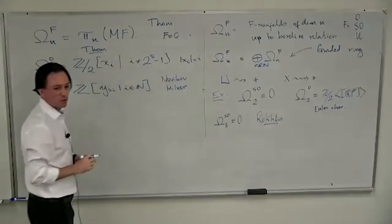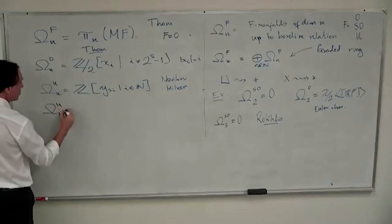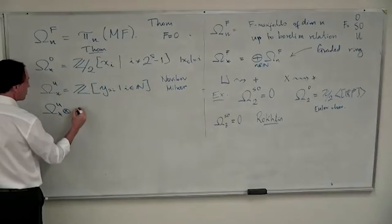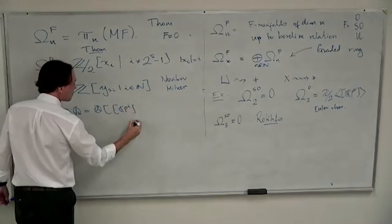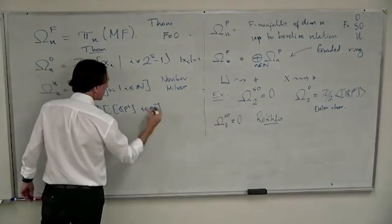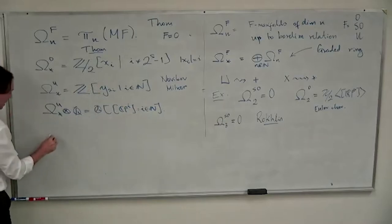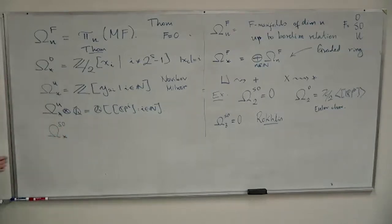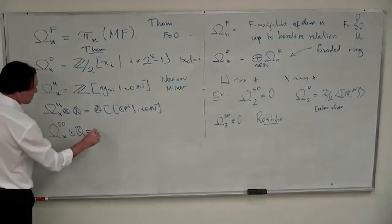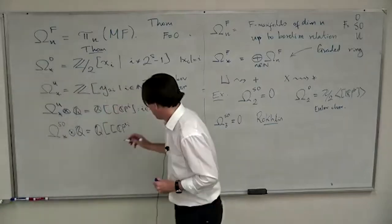This is Novikov and Milnor — I don't want to get into details about who did what, but it was known that if you tensor with the rationals the unitary bordism ring is a polynomial algebra generated on the complex projective spaces. The oriented bordism ring is very complicated, but if you tensor with Q then the Pontryagin classes say it is generated by CP⁴, CP⁸, CP¹², etc. in degree four — these are the generators with rational coefficients.